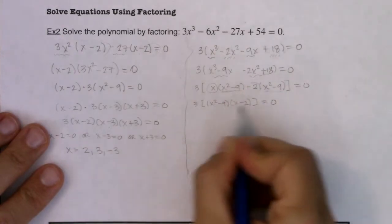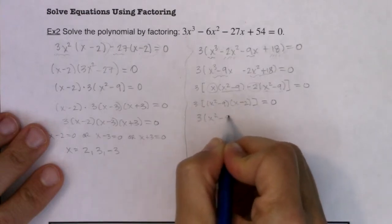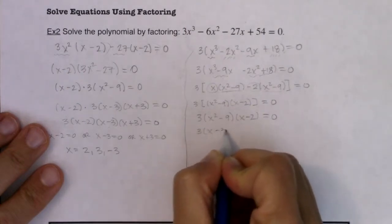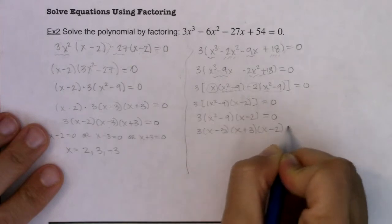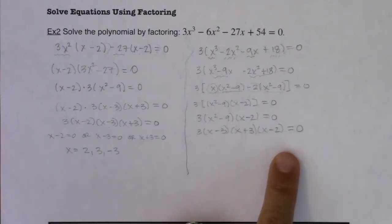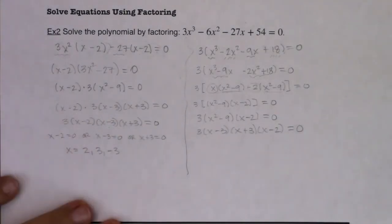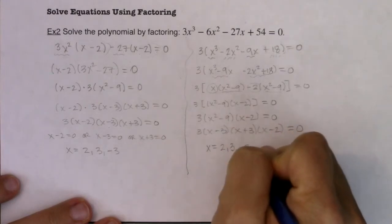Okay and it looks like I don't need the brackets anymore so I have 3 times x squared minus 9 times x minus 2 is equal to 0. 3 we've got x minus 3, x plus 3, x minus 2 and I think you can see now that I have the same three solutions presenting themselves as I did when I did it first on this first method. So I have either x is equal to 2, 3 or negative 3.